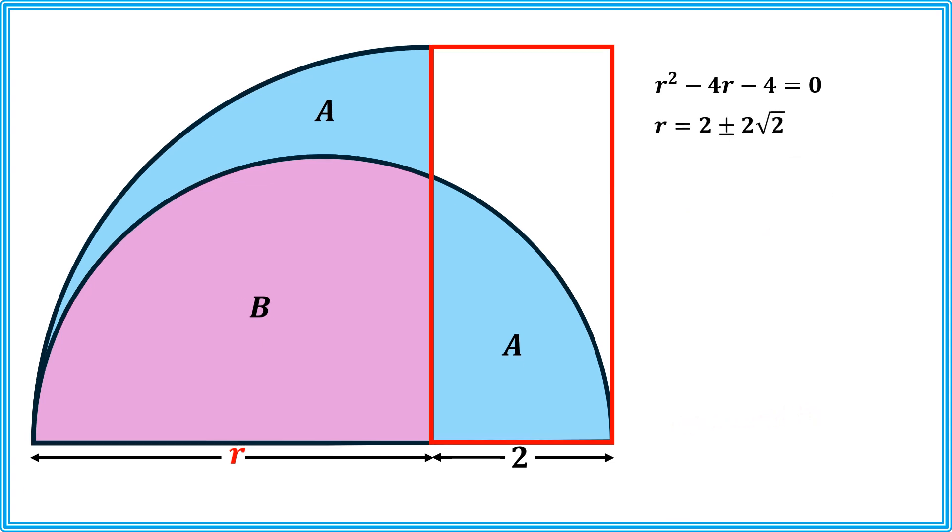Solving this quadratic equation, we will get these two roots, among which the second root, which is 2 minus 2 times square root of 2, is a negative value